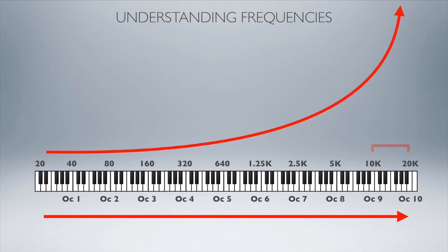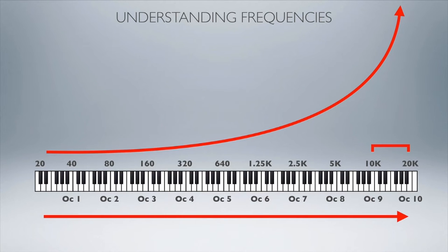Let's look at the last octave. Go down from 20k and that's where you'd find 10k — one octave down from the very top of what you can hear. Halve that again and again and again, and it turns out the mid-range is around 1k.